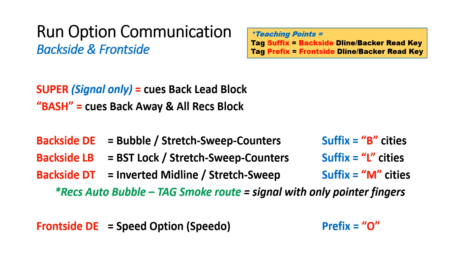The first one we like to start out with is our simple super series. There's just a signal, no verbal here, but the back simply is going to lead block on these core concepts where you stretch to start with, and the quarterback becomes the ball carrier. The next one we like to use, which is simple and sound and a proven concept, is a bash call or cue. This is a verbal that tells the back to go away, and then the running back will become the runner, but reading the backside automatically with all receivers blocking.